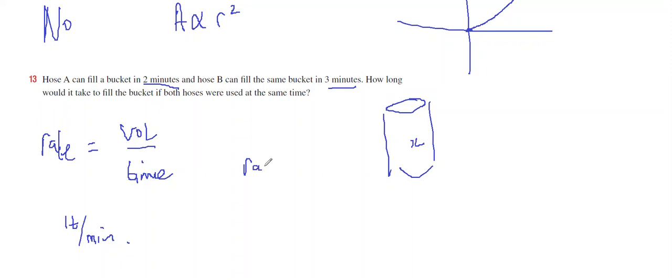So the rate for Hose A is going to be X divided by 2, because it takes two minutes for Hose A to fill the bucket. And the rate for Hose B will be X divided by 3, because the rate is the volume divided by the time.